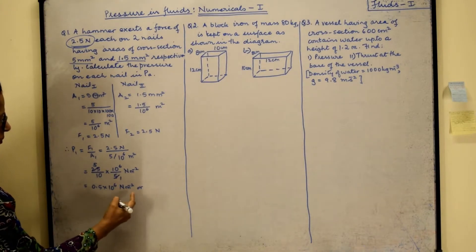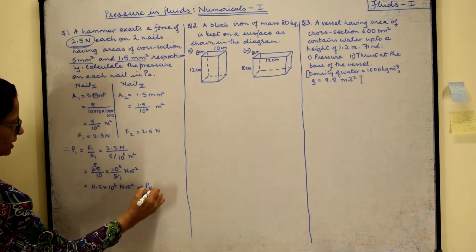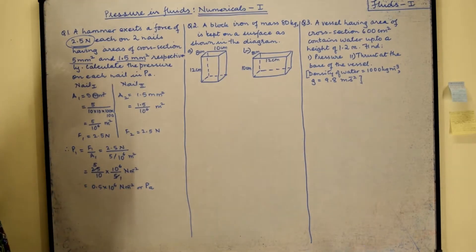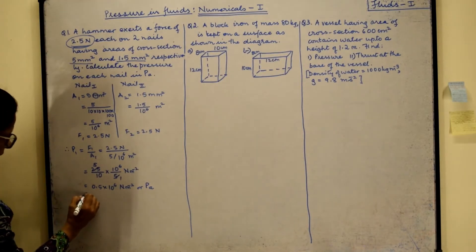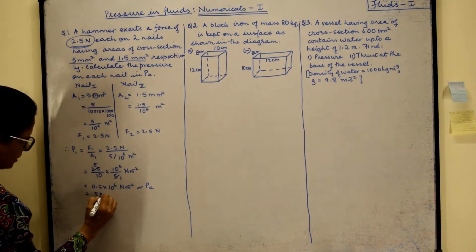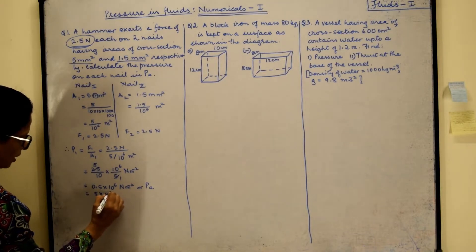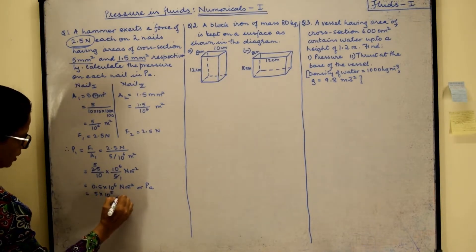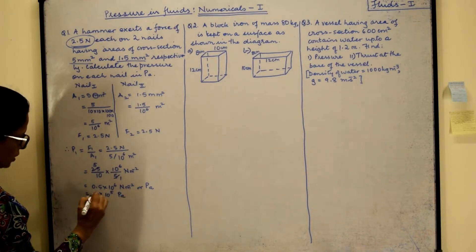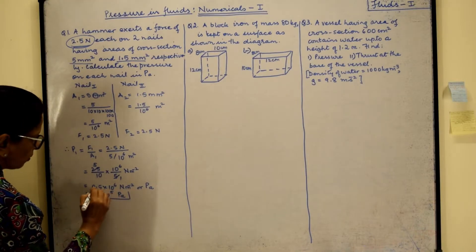And as you know, newton per meter square is also called Pascal. So that gives us 5 × 10⁵ Pascal. This is our answer 1.